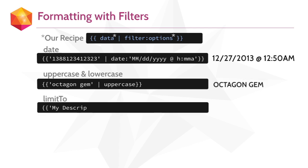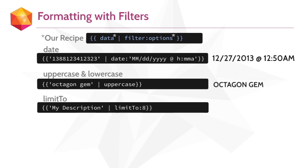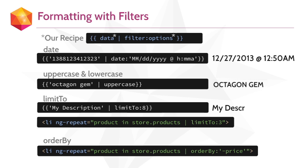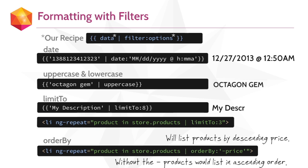Next, we have the limitTo filter, which will allow us to limit the number of characters in a string if we want. It's also really useful if we want to limit the number of items in an array, like if we only want to display the first three products. The orderBy filter will allow us to sort our products. If we wanted to sort our products from most expensive to least expensive, we would write pipe orderBy minus price. Without the minus, products would list in ascending order, from cheapest to most expensive.